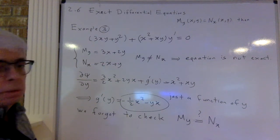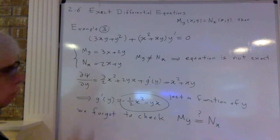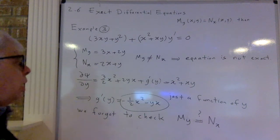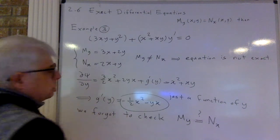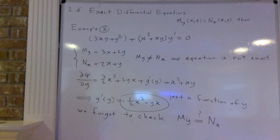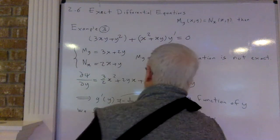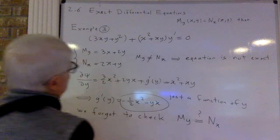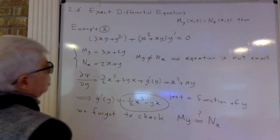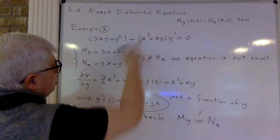So if you start solving and the right side is not just a function of y, that's a sign something is wrong. Let's check: M_y is derivative of 3xy + y² with respect to y = 3x + 2y. And N_x is derivative of x² + xy with respect to x = 2x + y. They are not equal, so the equation is not exact. If I had checked this at the beginning I wouldn't have gone through all that.